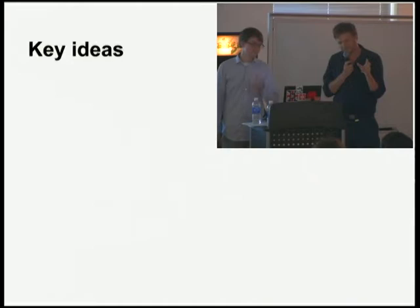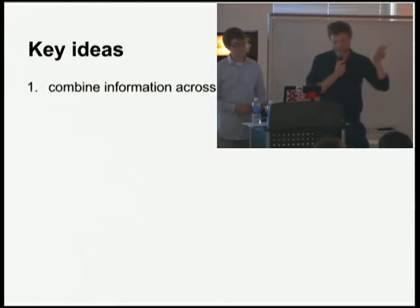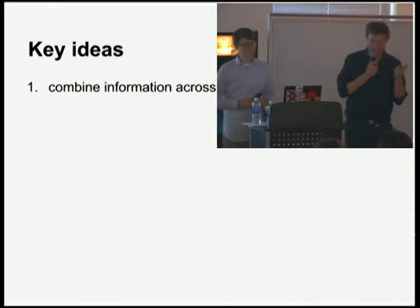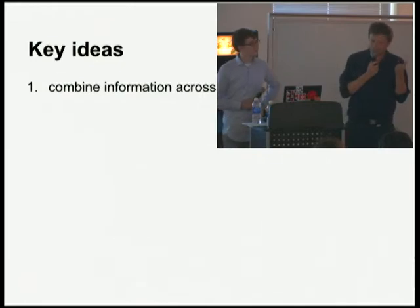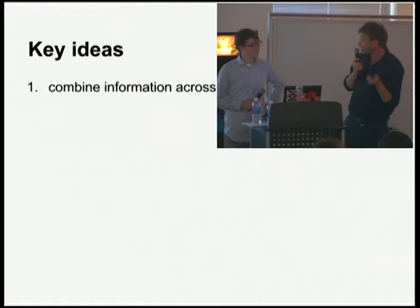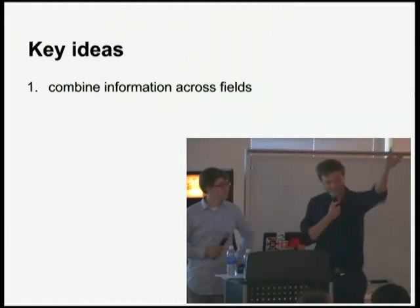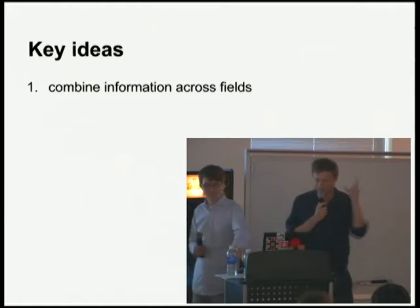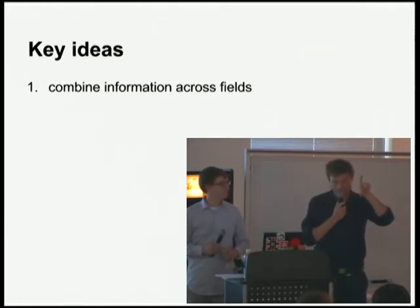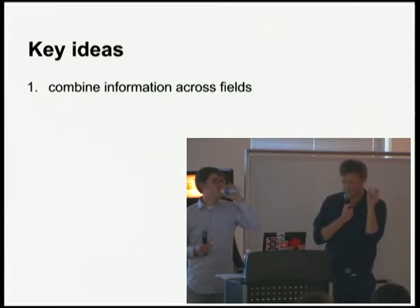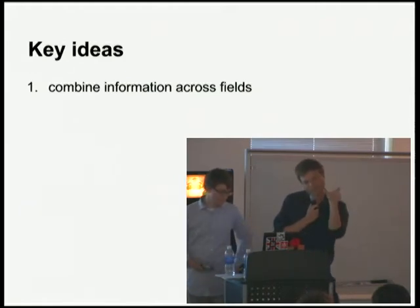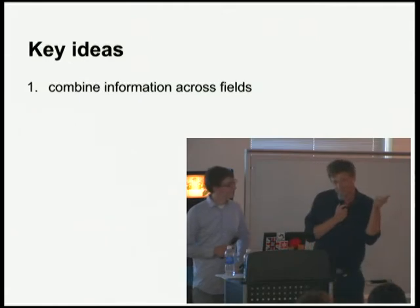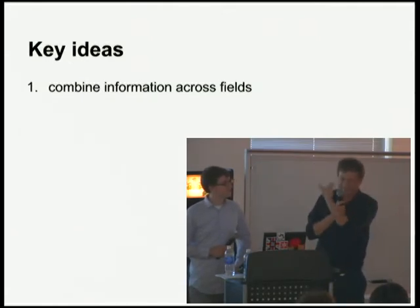There are three key ideas to doing this well. First: combine information across fields. This is a simple idea, and it's actually surprising how often it doesn't happen. Google Refine, for example, has really beautiful, very powerful clustering algorithms, but they cluster only on one field at a time. Knowing that two records have similar representations of a name is good evidence they might be duplicates, but if they have both the same name and address, that's much stronger evidence.